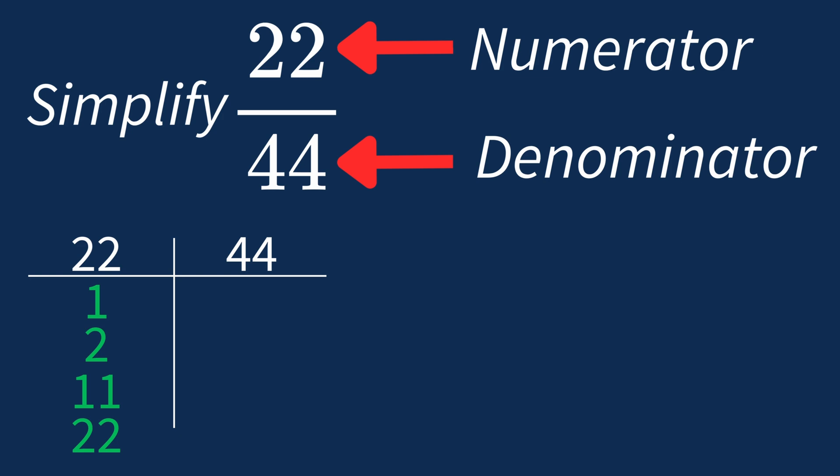For 44, the factors are 1, 2, 4, 11, 22, and 44.